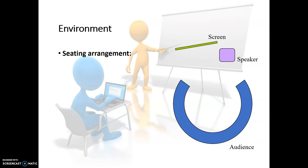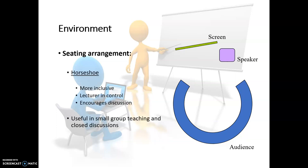Here's another seating arrangement — the horseshoe. It captures some of the inclusivity of the circle, but the lecturer still maintains their position somewhat outside the group and in control. This is a good way of having a small closed discussion in which the speaker needs to maintain control. For example, if you're discussing blood gases or ECGs and you want participation from the audience but you as the speaker need to maintain control and move the discussion in the direction you want it to go.